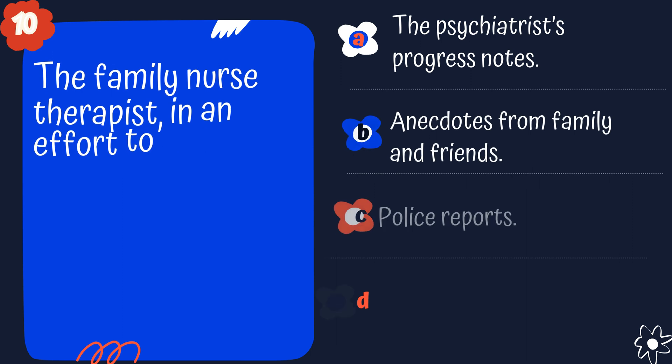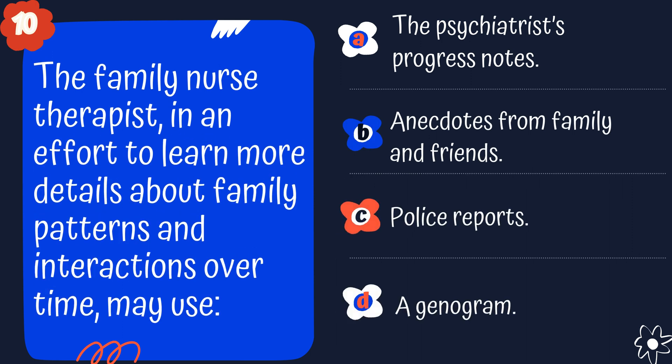Question 10. The family nurse therapist, in an effort to learn more about details about family patterns and interactions over time, may use what? A. The psychiatrist's progress note. B. Anecdotes from family and friends. C. Police reports. Or D. A genogram.